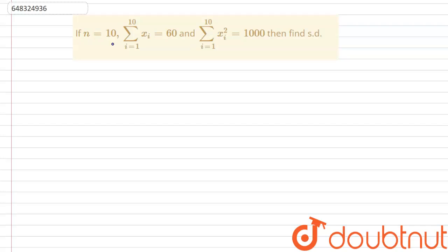It is given that if n is equal to 10 and the sum of xi from i is equal to 1 to 10 is equal to 60 and the sum of xi squared from i is equal to 1 to 10 is 1000. Then find the standard deviation of this data.